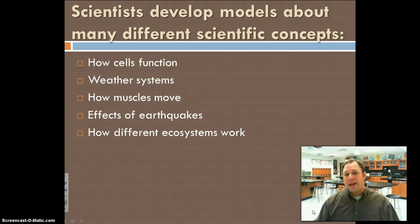Some examples of how we might use models to look at different scientific concepts are how cells function, or weather systems, how muscles help move the body, effects of earthquakes, and also how different ecosystems work. This is just a very short list of a long list of things that we can use models to represent.